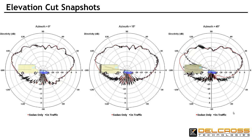In these views, Savant captures radiation pattern elevation cuts at three different azimuth angles. The red curves show the antenna's installed performance in the presence of the car alone. The black curves show the complete pattern with the effects of the large metal van. The blockage effect is clearly manifest.